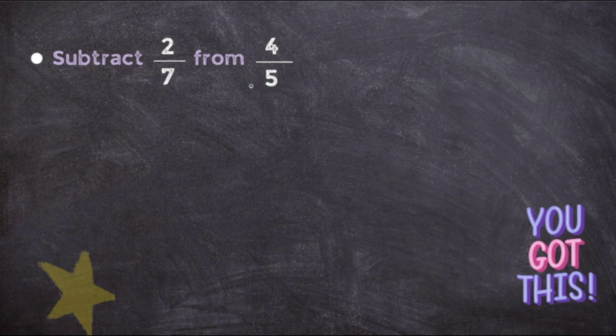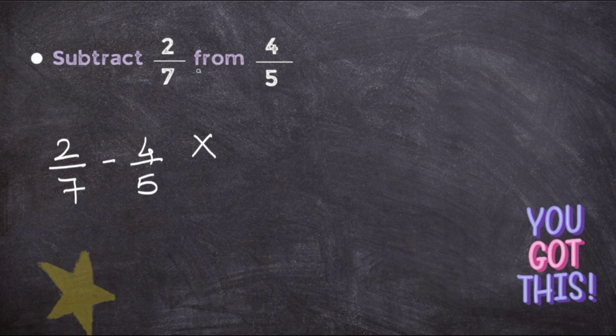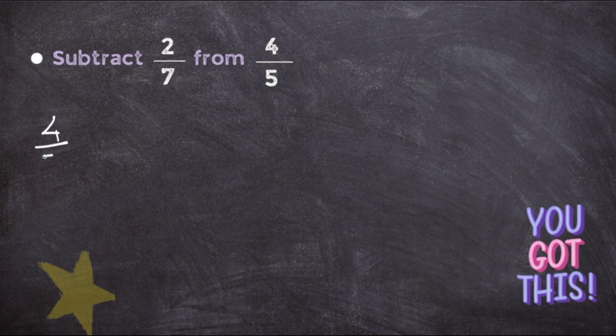That means here you are not going to do 2 upon 7 minus 4 upon 5. Wrong! What you are going to do is you are going to remove 2 upon 7 from 4 upon 5. So it will be 4 upon 5 minus 2 upon 7.